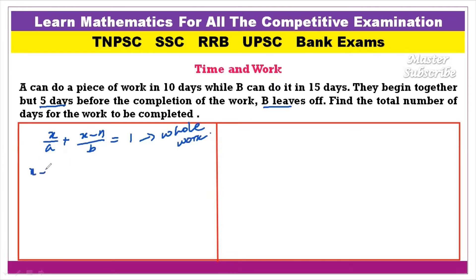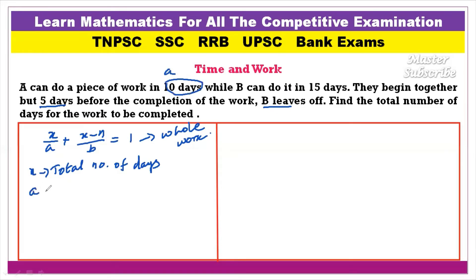Here x is the total number of days. The value of A is 10, since A can do a work in 10 days. And B is equal to 15 days.